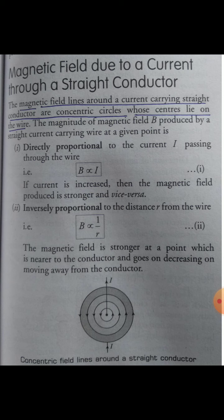Different magnetic field patterns are produced by current-carrying conductors of different shapes. In today's class we are going to understand the magnetic field due to a current through a straight conductor — when the conductor is a straight object.